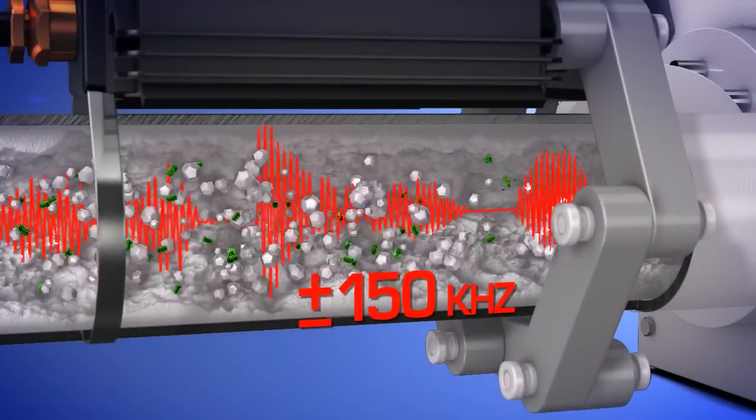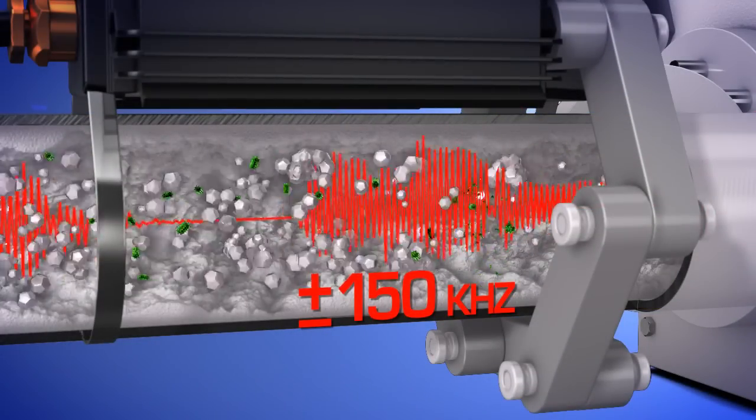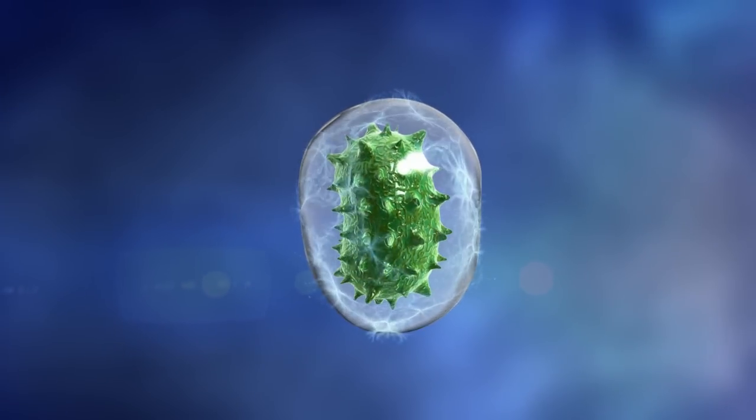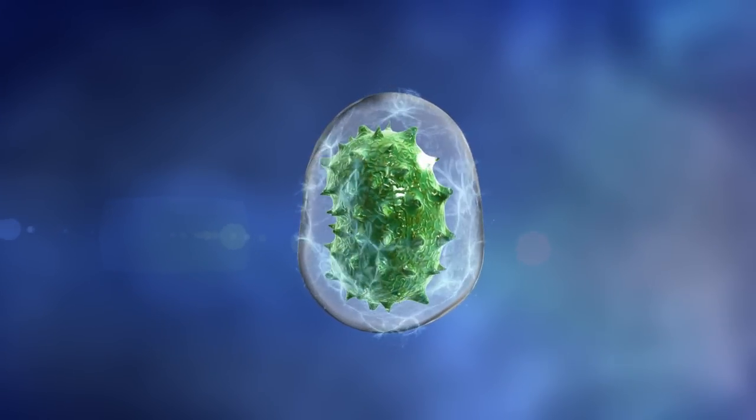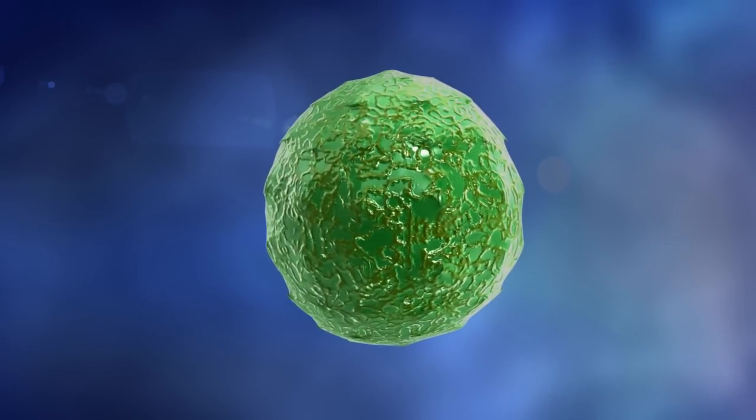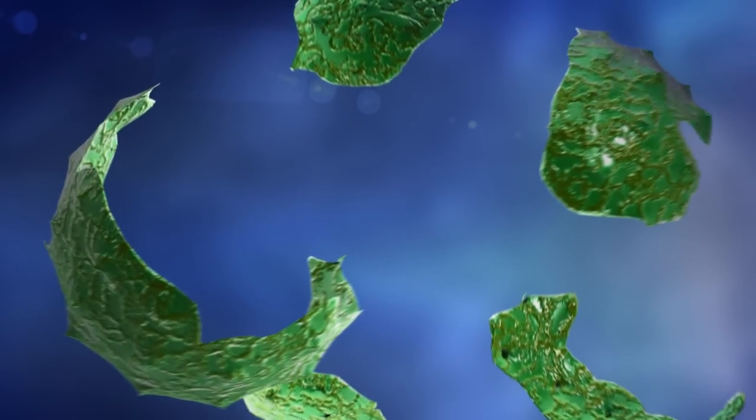Bacteria and algae passing through the water conditioner's ring of ferrites are charged by the electrical signal, forming a hydration layer of pure water around the cell. Osmosis forces water into the bacteria and algae cells, creating osmotic pressure, which ruptures the cell membrane and causes it to die.